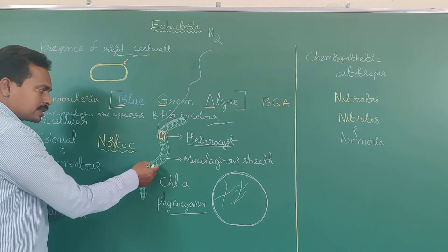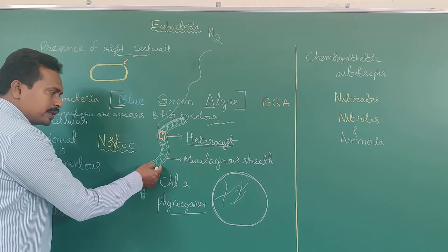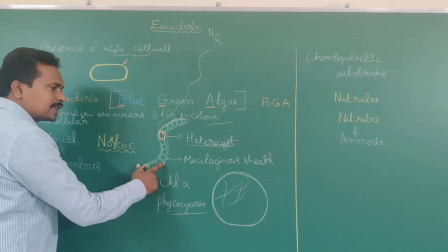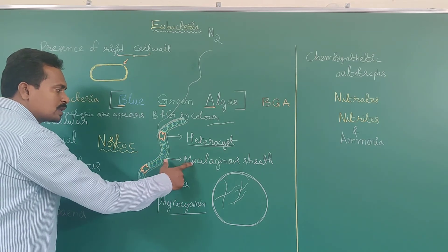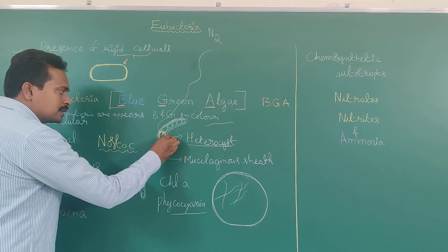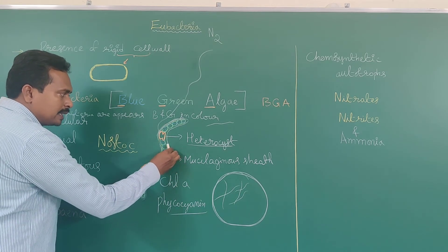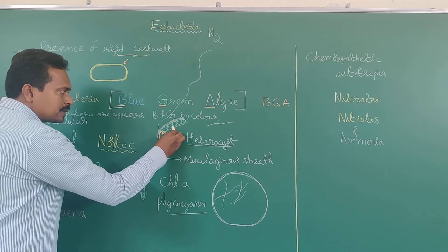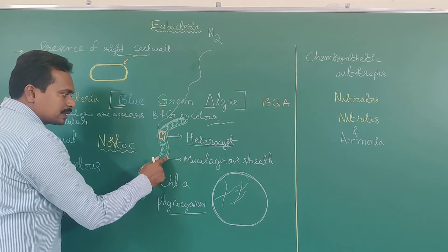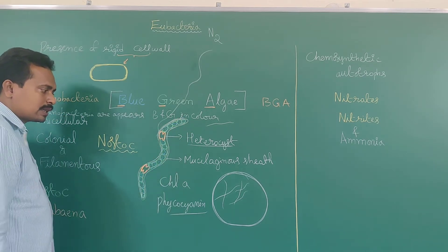Here in the filaments, the Nostoc filaments are covered by a mucilaginous layer or mucilaginous sheath. This is the outermost layer. The white layer represents the mucilaginous sheath — this is the outermost layer.